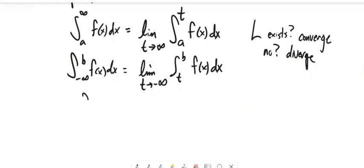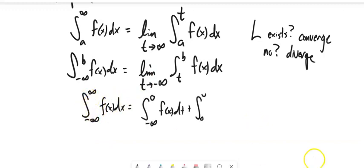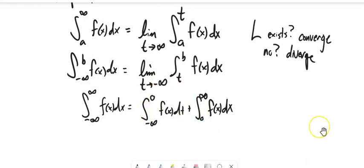If it converges, it converges to a value — we can actually get a number for it. If it diverges, we can't find a number for it. Notice we could even have the integral of a function over everything. If this were the case, we would break it up into pieces, since we know we can break up integrals with addition. I chose zero here as the spot to break it up, but it could be anywhere, really.